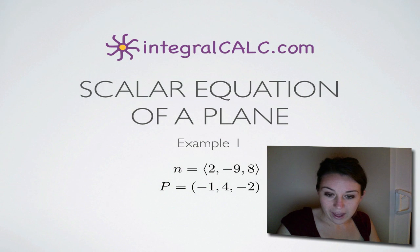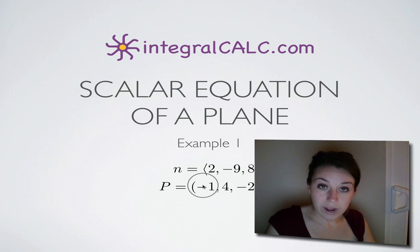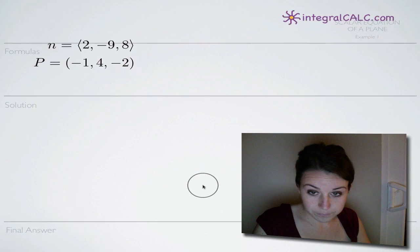The example that we have gives us the normal vector n and the point on the plane P. So given those two pieces of information, the normal vector n and the point P, we can find the scalar equation of the plane.